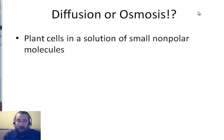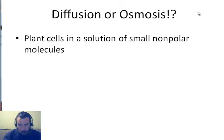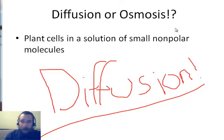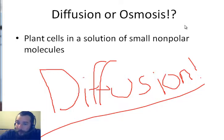Next scenario: plant cells in a solution of small non-polar molecules — what's going to happen? That's right, that one is diffusion. Small molecules can permeate through the cell membrane, so no need for plan B when plan A works out just great. That's why it's plan A — it's the first thing you try.